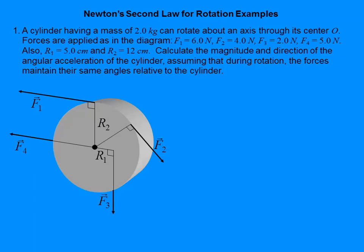Here's our first problem. We've got a cylinder here — a solid cylinder from the picture. We've got four different forces being applied at different places along the way, and we want to know the magnitude and direction of the angular acceleration of the cylinder, assuming that these forces stay the same size and the same angles as this thing spins.